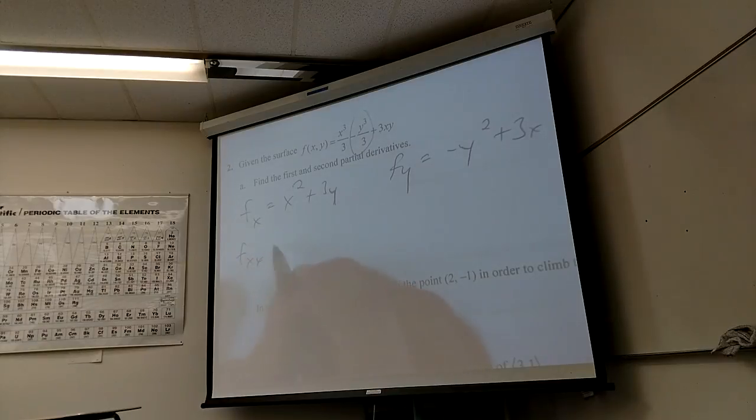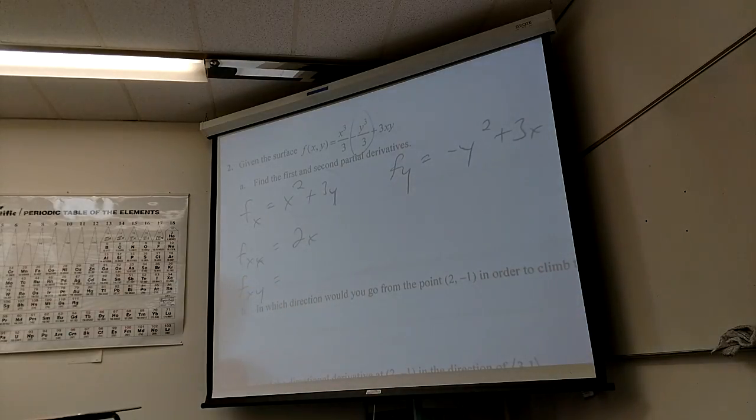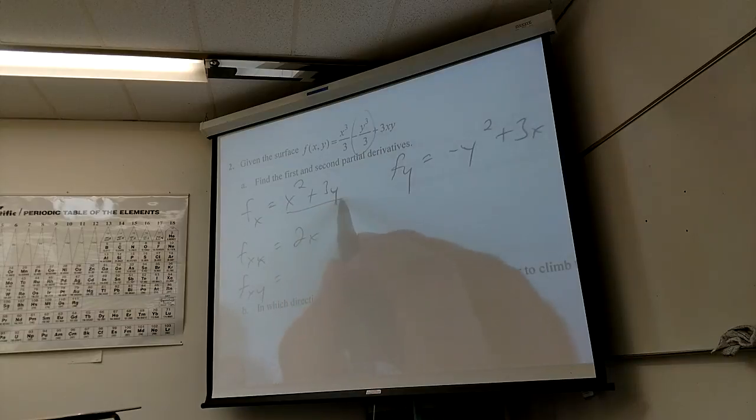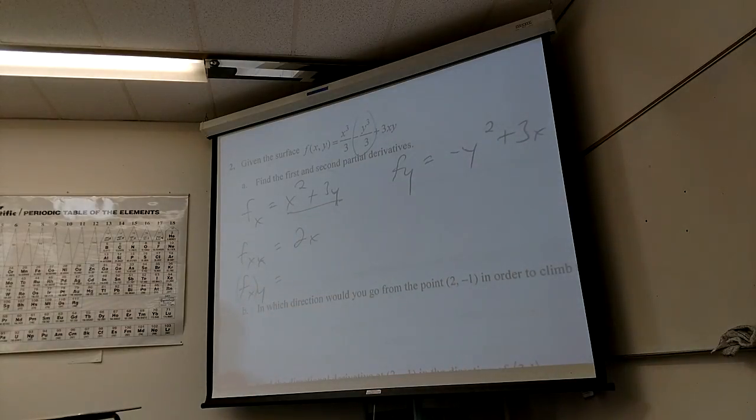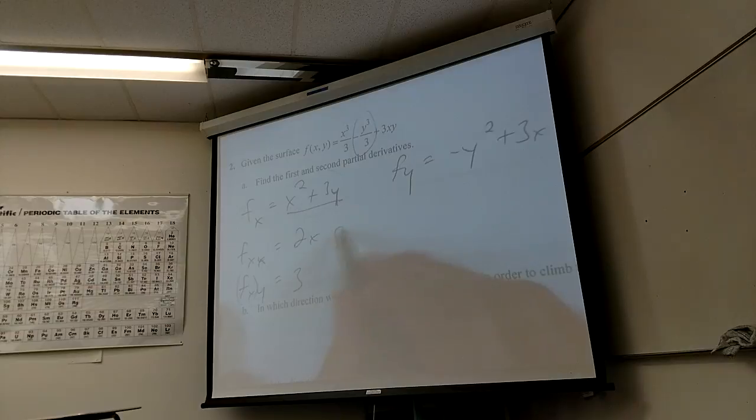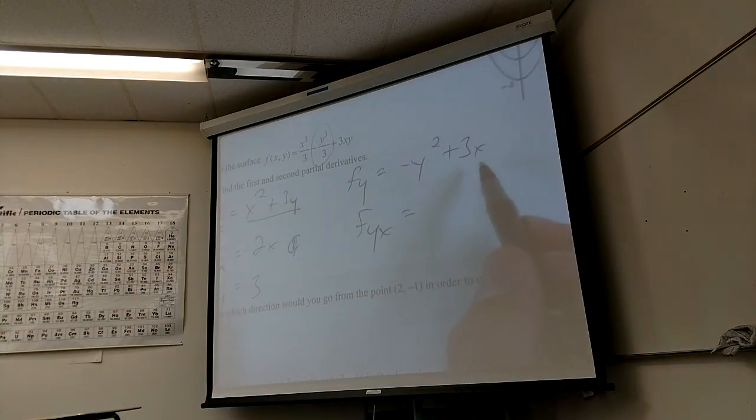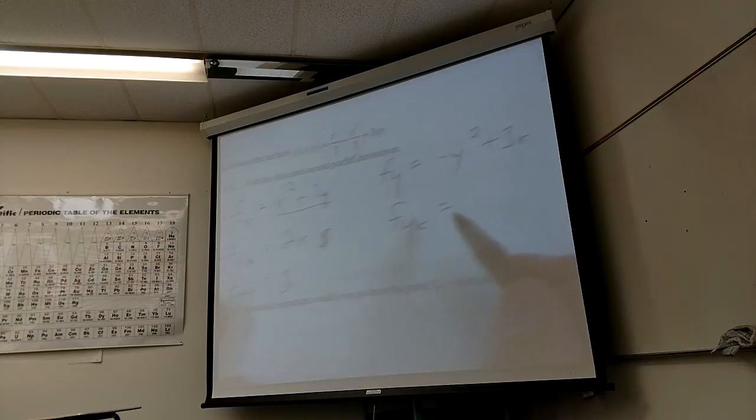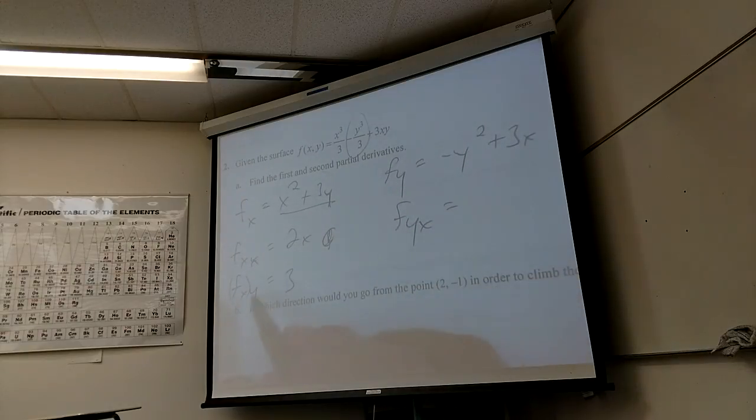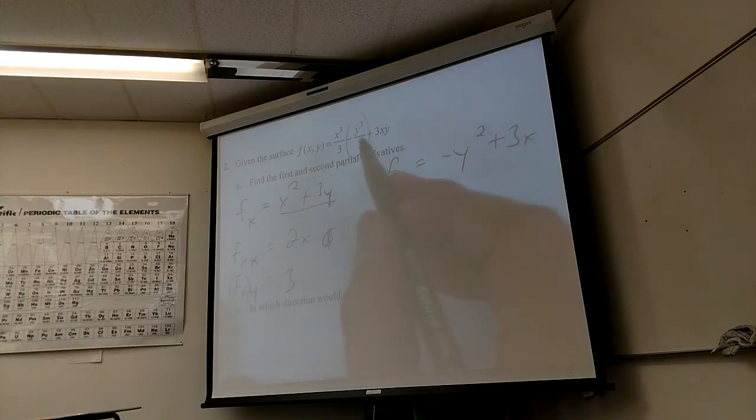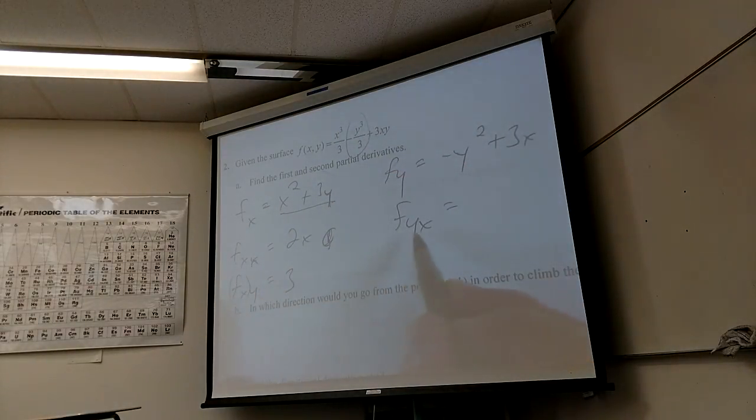And then what's fxx? 2x. Yeah, take the derivative of this with respect to x. 2x. What's fxy? 3. And you take the derivative of this with respect to y. That's what that means. And then what's, you got it. What's fyx? It should be 3. Yeah, it should be 3 and thankfully it is 3. Why should it be 3? Why did John say that? Because y is the constant function. Yeah, Clairaut's theorem, right? This is a nice, well-behaved function. So these mixed partials should be equal to each other. Mixed second partials.